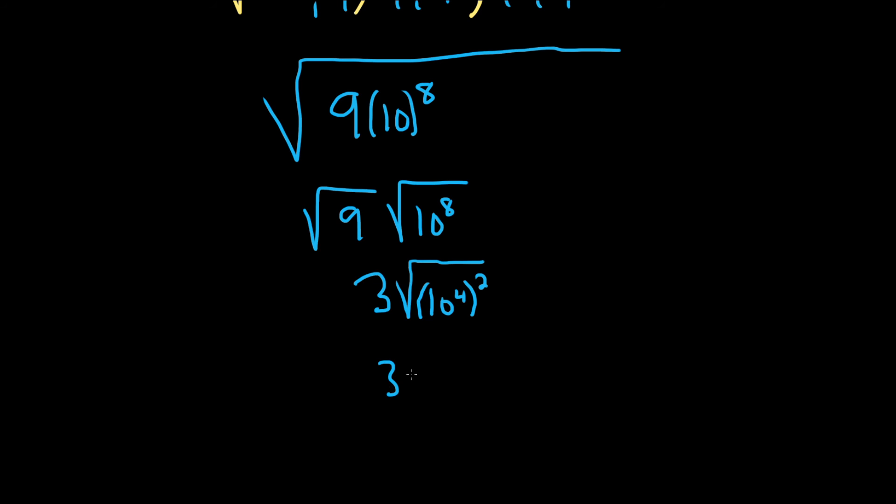So this will be 3 times 10 to the 4th. And then 10 to the 4th, we know, is a 1 with 4 zeros.